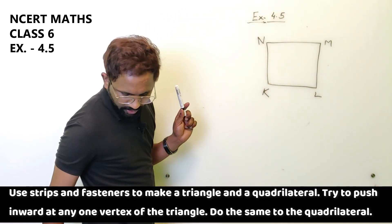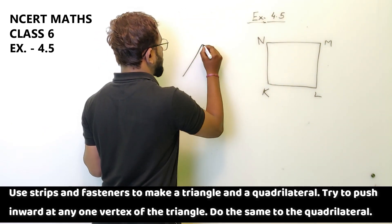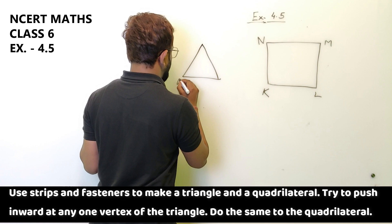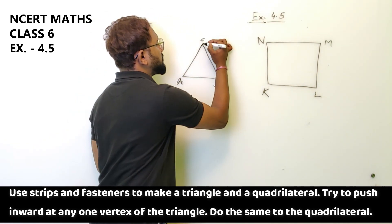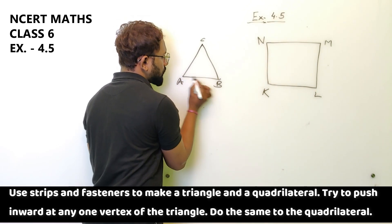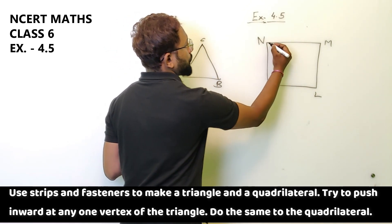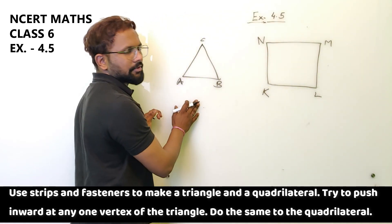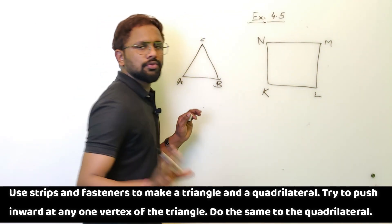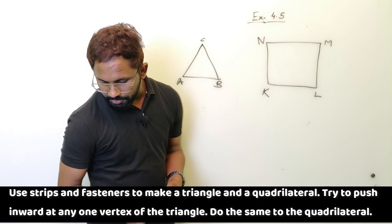So here, this is the quadrilateral you have made, and this is a triangle - A, B, C. What you have to do, we have to push from one vertex, any vertex you want, from this place. And from this you can also, in the triangle you have to do the same. In the triangle you have to do the same.